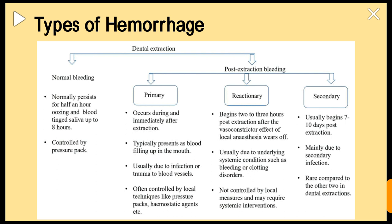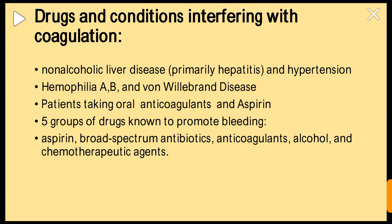Reactionary hemorrhage is usually due to underlying systemic conditions such as bleeding or clotting disorders; it is not controlled by local measures and may require systemic interventions. Secondary hemorrhage usually begins seven to ten days after extraction and is due to secondary infection. Compared to the other two types, secondary hemorrhage is quite rare.